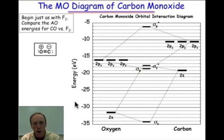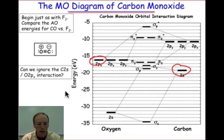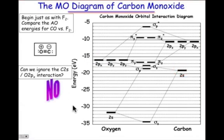We also know that the py and pz orbitals can come together to make pi-bonding and pi-antibonding contributions like we did with fluorine. The question I ask is can we ignore the interaction of the 2S on carbon and the 2px on oxygen? These two are pretty close in energy. You can see that they're fairly well matched, and so for that reason, the answer is no.